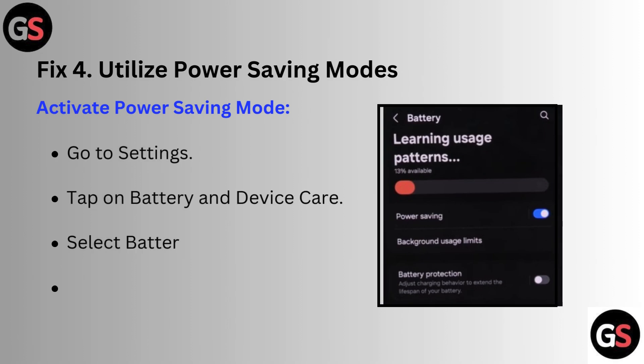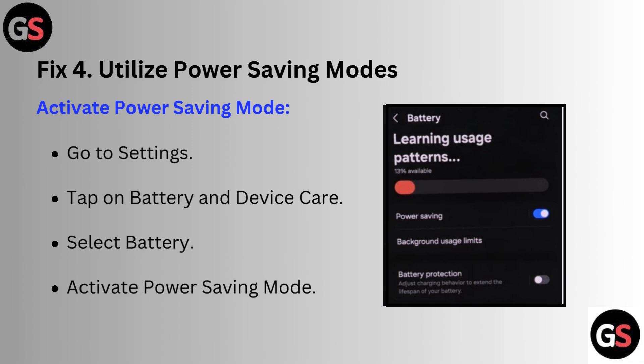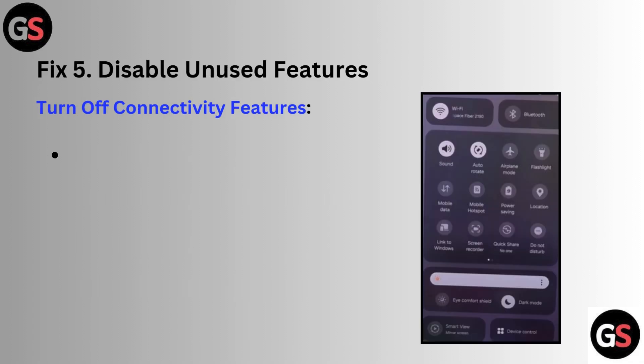Fix 4: Utilize power saving modes. Activate power saving mode — go to Settings, tap on Battery and Device Care, select Battery, and activate Power Saving Mode.